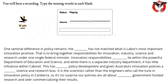One seminal difference in policy remains: the coalition has not matched what is Labor's most important innovation promise — that is, to bring together responsibilities for innovation, industry, science, and research under one single federal minister. Innovation responsibilities currently lie within the powerful Department of Education and Science, and while there is a separate industry department, it has little influence within cabinet.